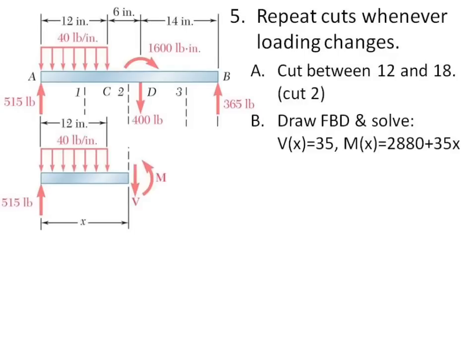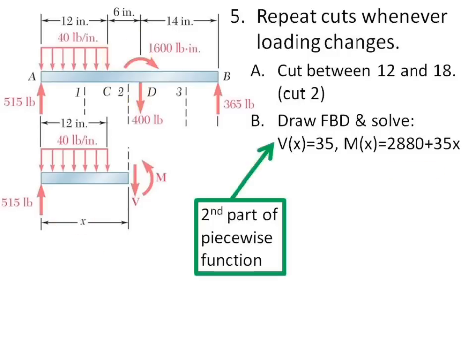The second chunk is about the same. I'm going to cut somewhere after this load ends and this one begins, somewhere in here. I don't know where this somewhere is. I'm going to call that X. Now I have my entire distributed load chunk. So I will have, in fact, all of 40 times 12. And I can write my equations of equilibrium and solve for V(x) and M(x). That's the second part of my piecewise function.